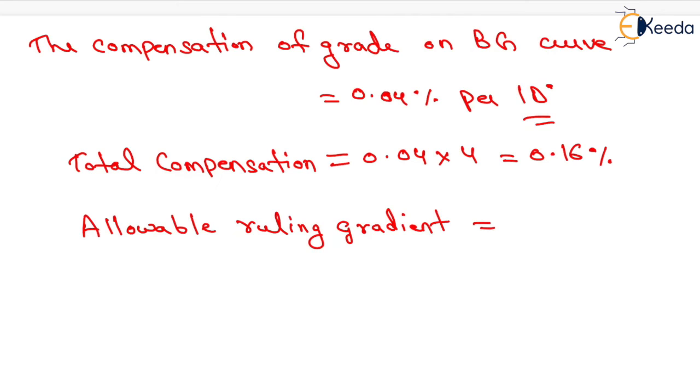Now allowable ruling gradient equals prevailing gradient minus total compensation. It will be 0.667 minus 0.16%. On solving this, we get 0.507%, or 1 in 197.